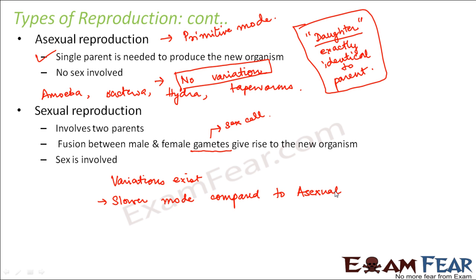Sexual reproduction is generally seen in higher animals. The various animals we see around us — cows, buffalos, cats, dogs, elephants, human beings — mostly reproduce sexually. It is more common in multicellular animals, whereas asexual reproduction is more common in lower plants and animals, mostly unicellular organisms.